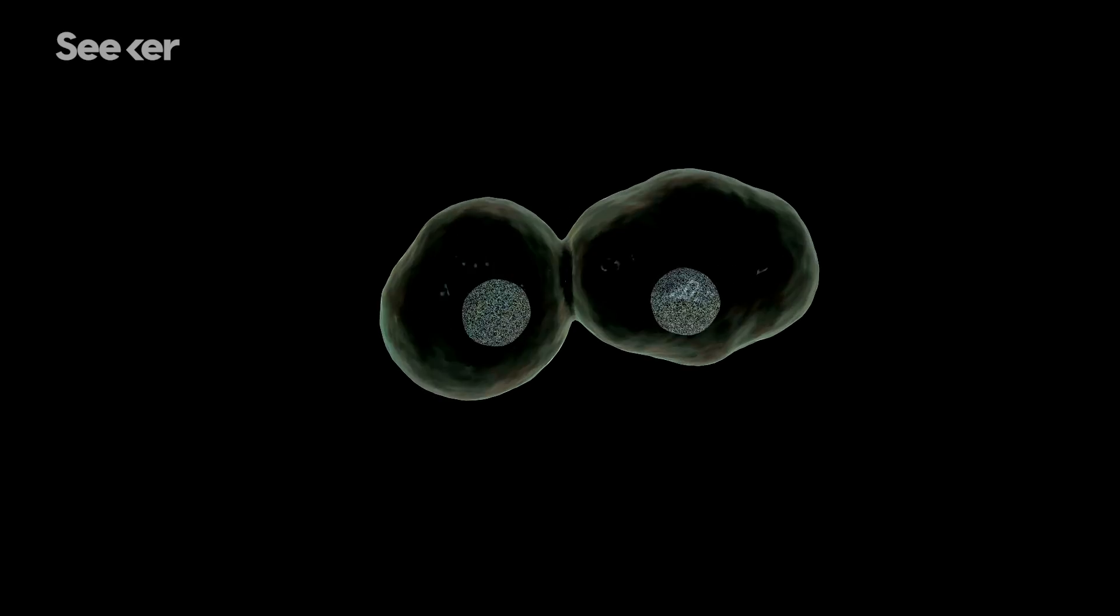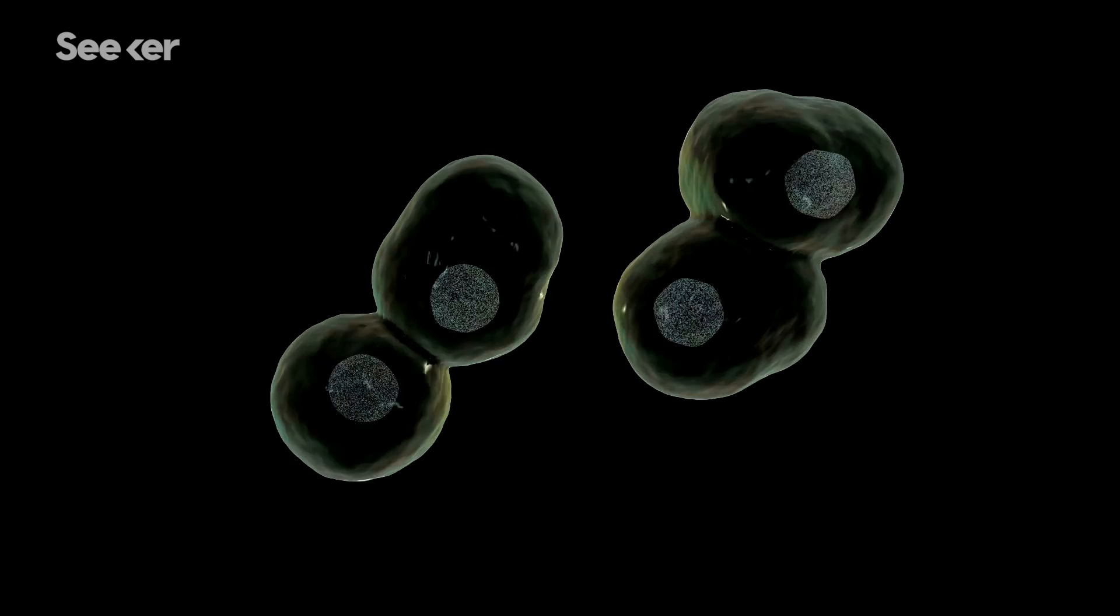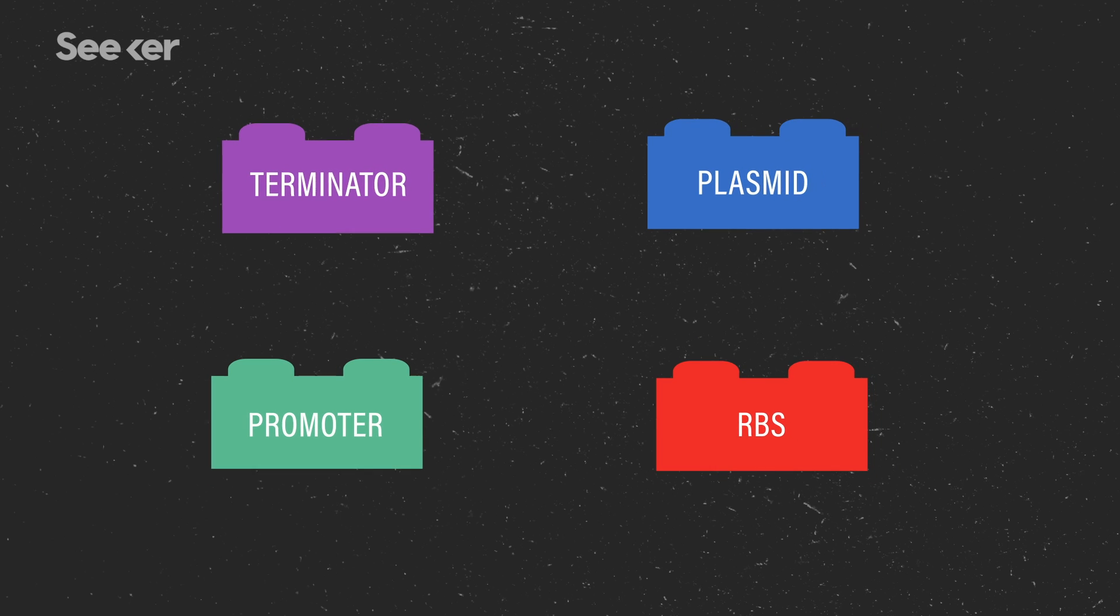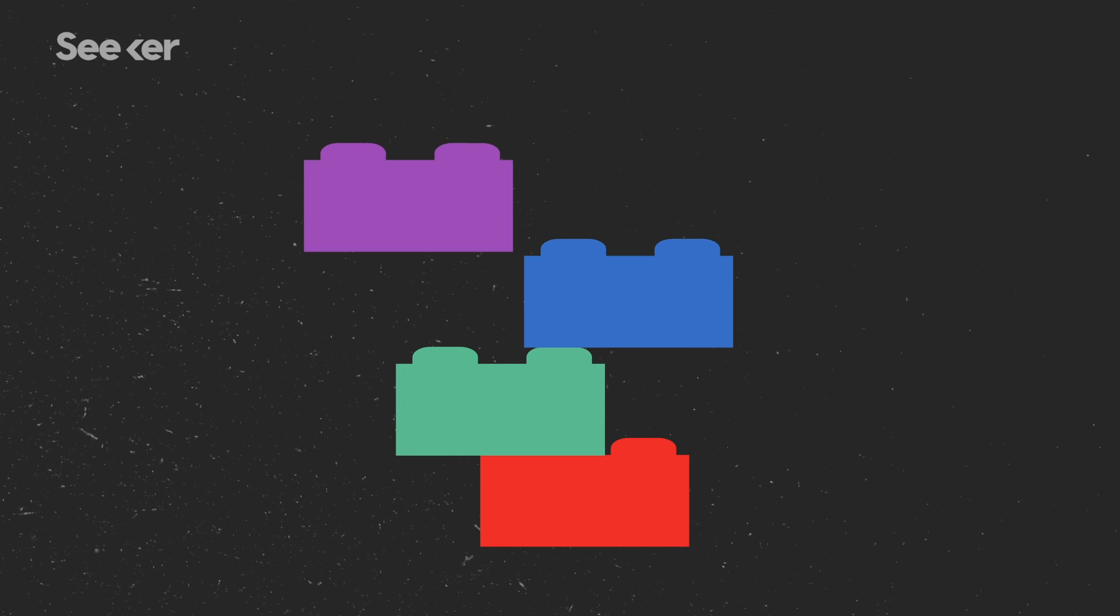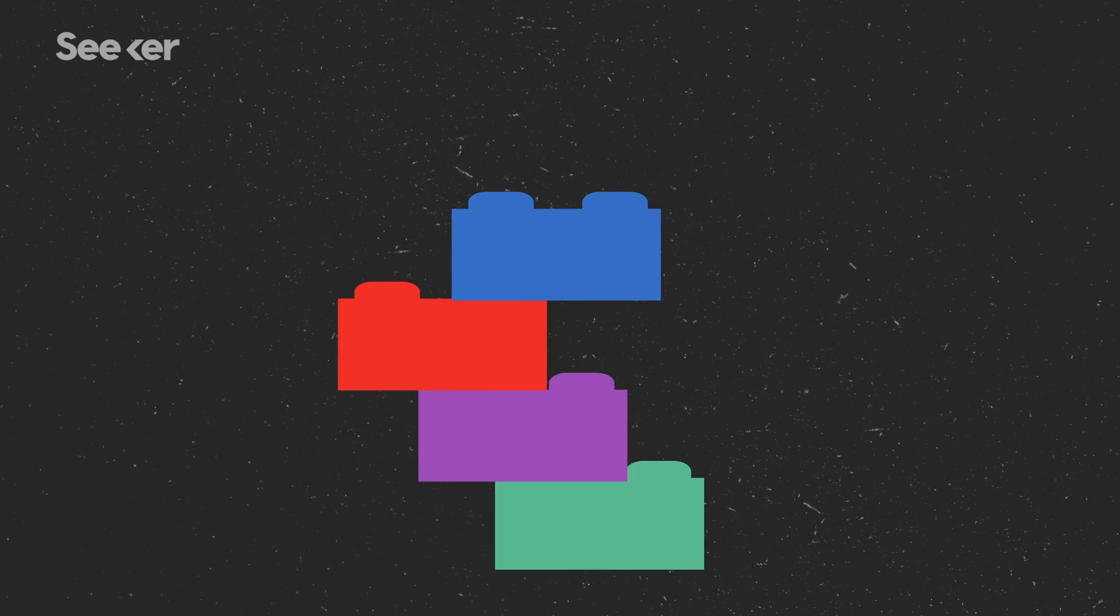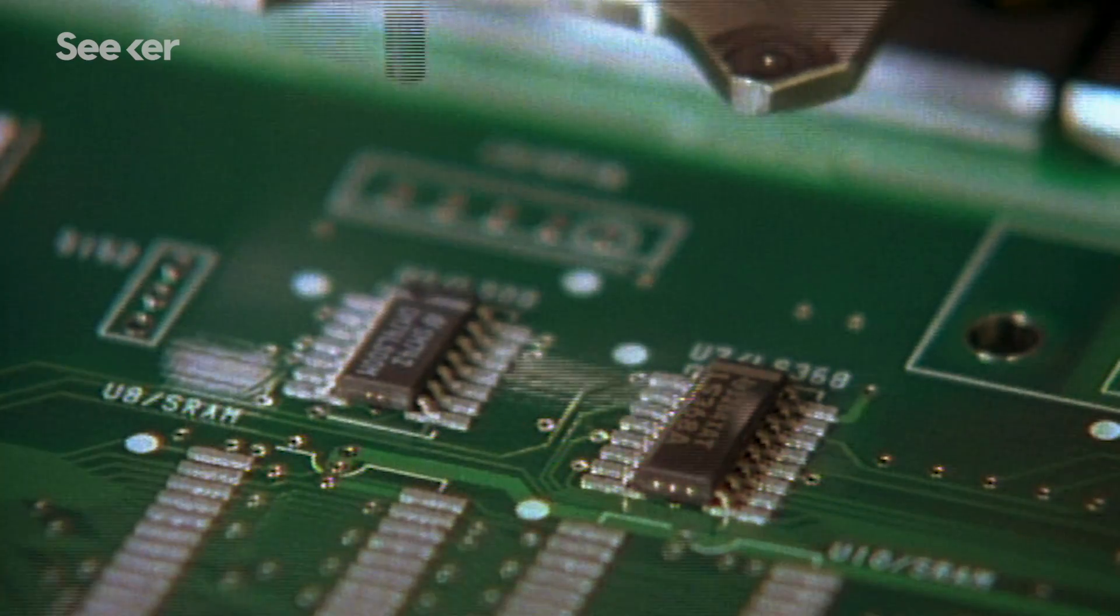Thinking of cells as programmable machines is the convergence of biology, engineering, and computing. It sees the building blocks of life that form cells and then tissues as parts that can be reassembled, programmed, and standardized, just like transistors and logic gates inside a computer chip.